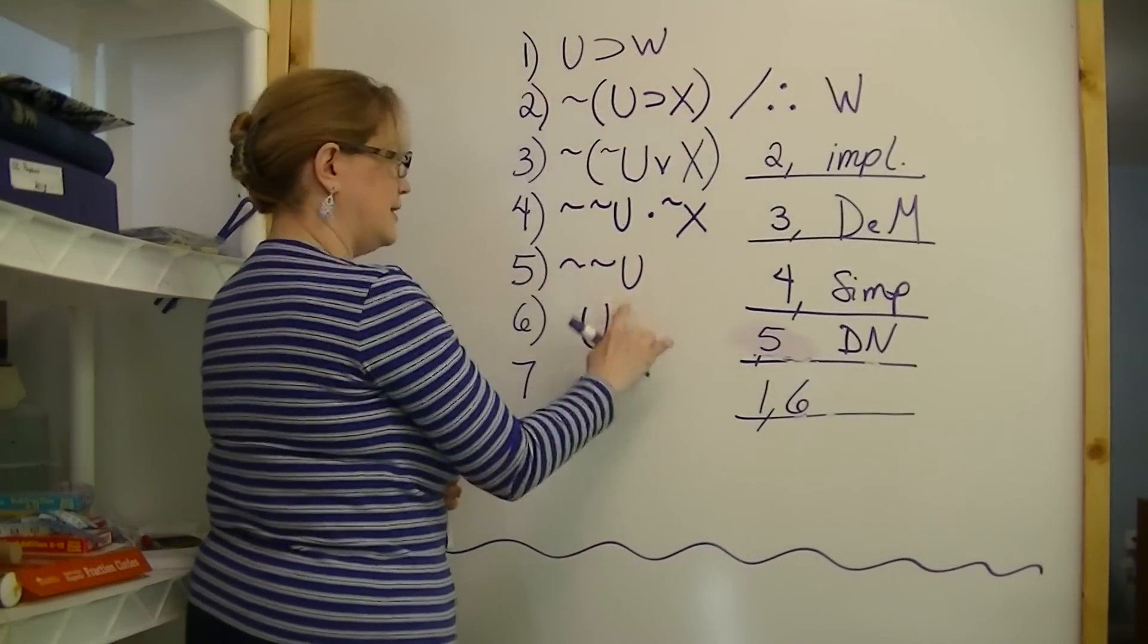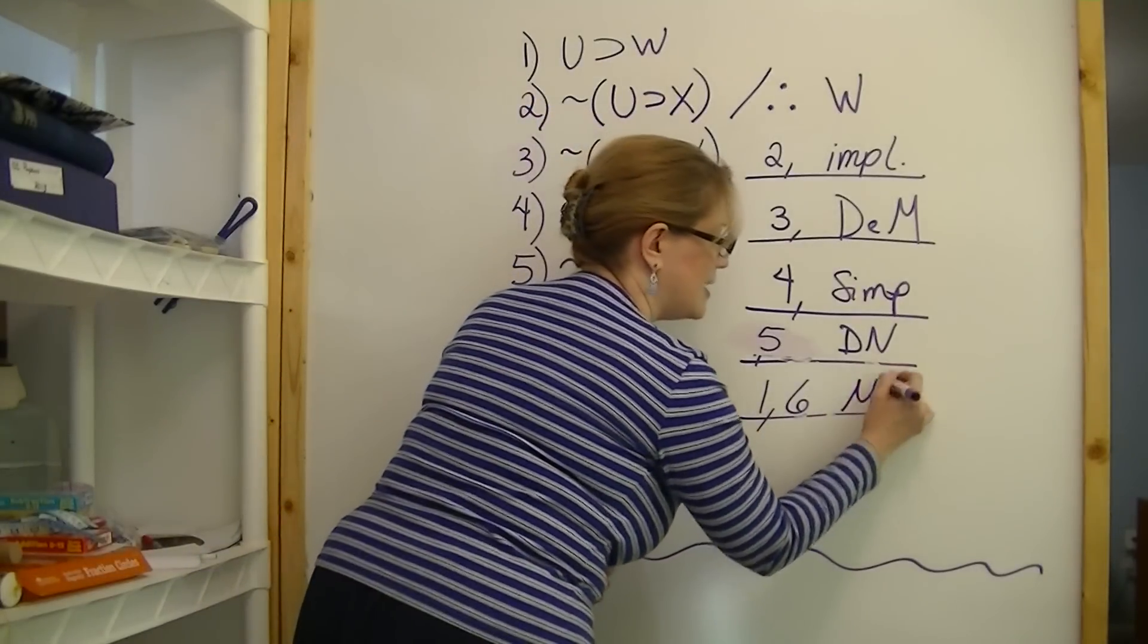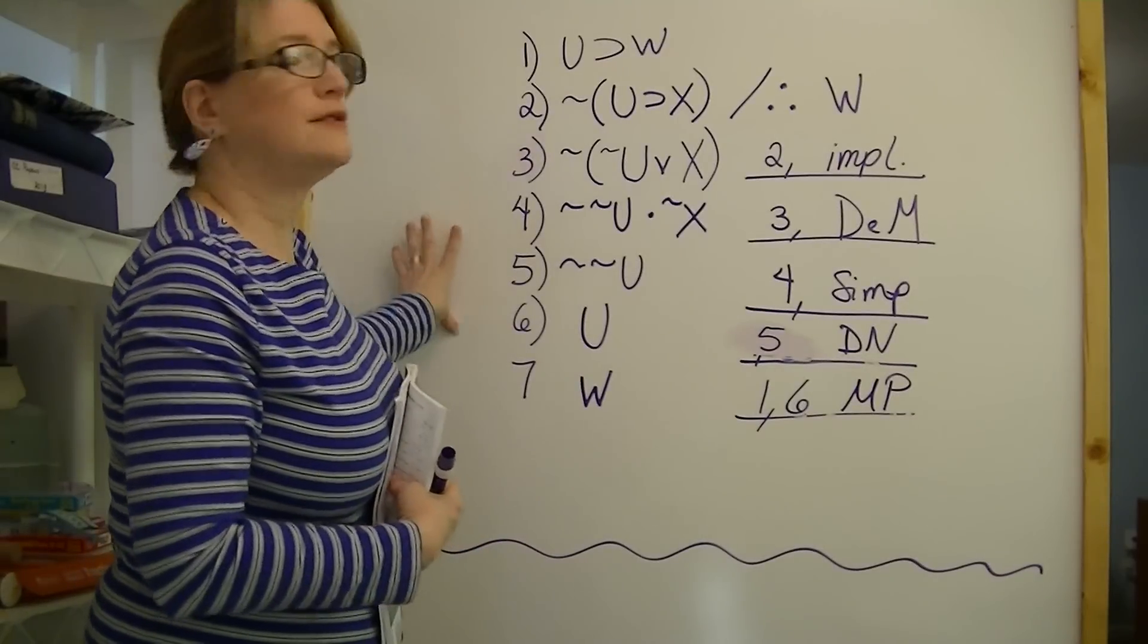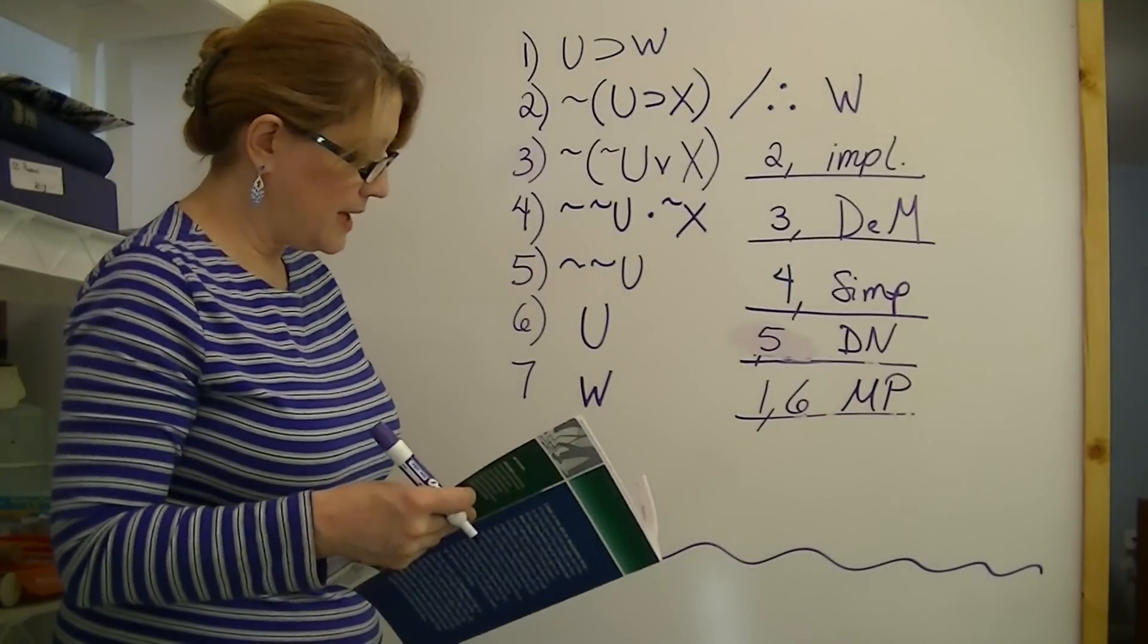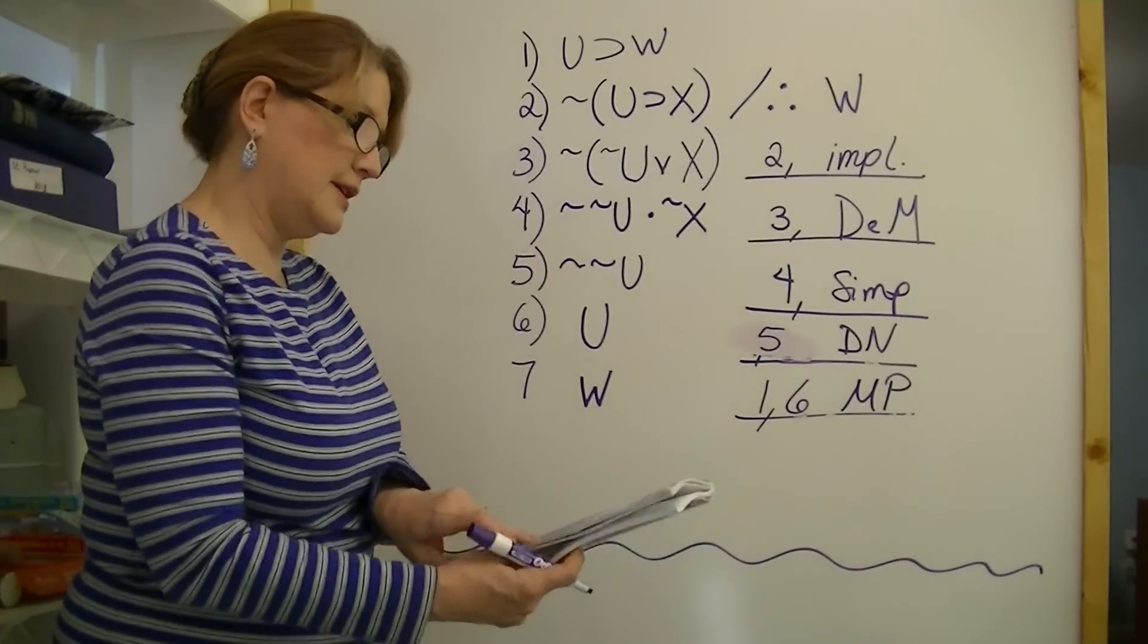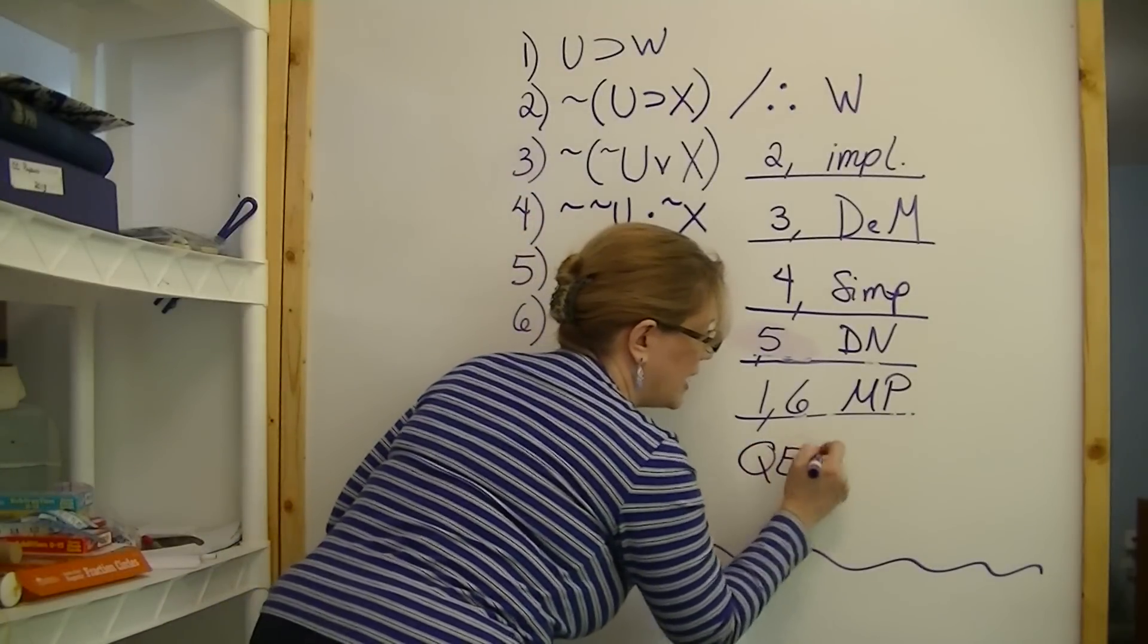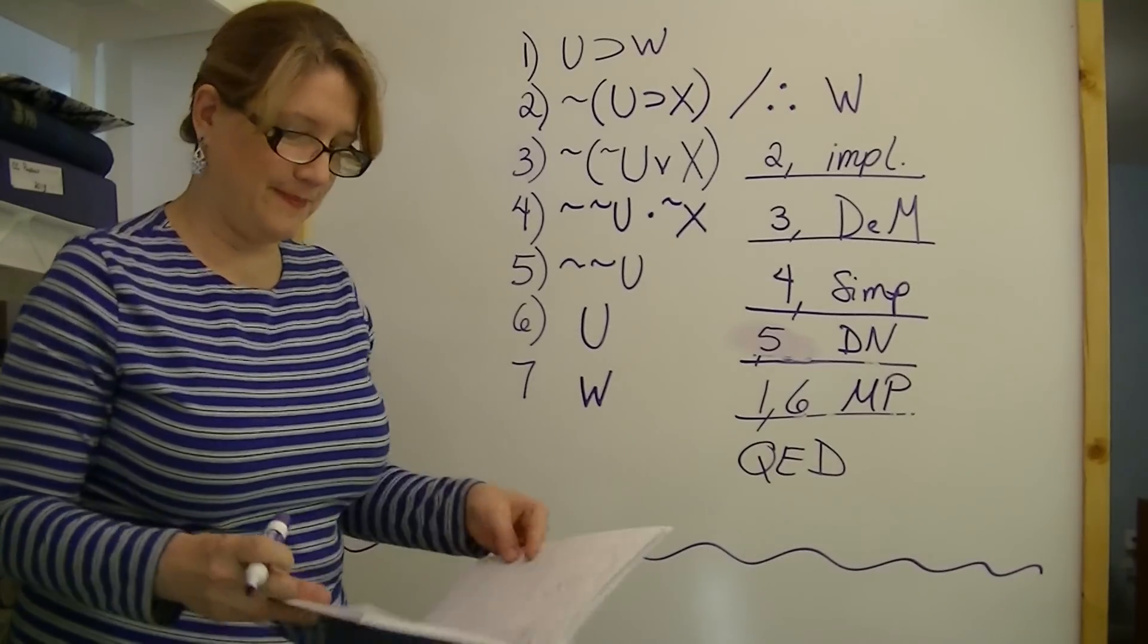And now if U, then W. U. Therefore, W. And we got that using lines one and six. The double negation was from line five. Lines one and six. If U, then W. U. Therefore, W. You should be shouting it out. Modus ponens. And that is your solution for, this is number eight on page 124 of your book, Intermediate Logic. Quod erat demonstratum. We finished. We've proven it.